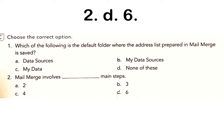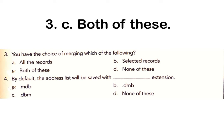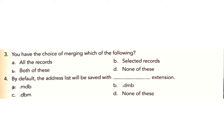B: Mail merge involves how many main steps? Options: A) 2, B) 3, C) 4, D) 6. Answer: D) 6. C: You have the choice of merging which of the following? Options: A) All the records, B) Selected records, C) Both of these, D) None of these. Answer: C) Both of these.